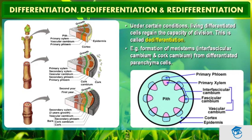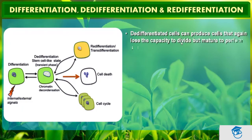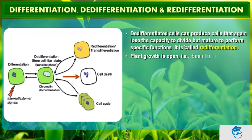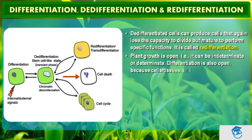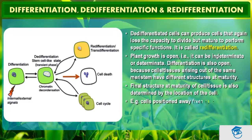De-differentiation is an interesting phenomenon in which living differentiated cells that have lost the capacity to divide can regain that capacity under certain conditions. While doing so, such meristems or tissues are able to divide and produce cells that once again lose the capacity to divide and mature to perform a specific function — this is called re-differentiation.